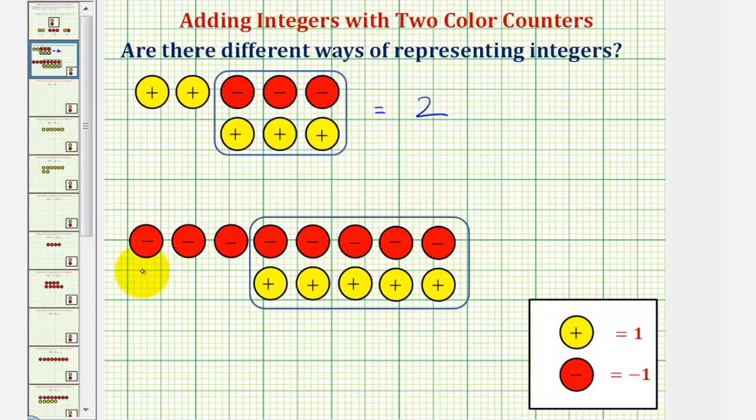Looking at these counters as a whole, notice how all of these counters would result in zero, leaving us with three red counters. Therefore, this represents negative three.